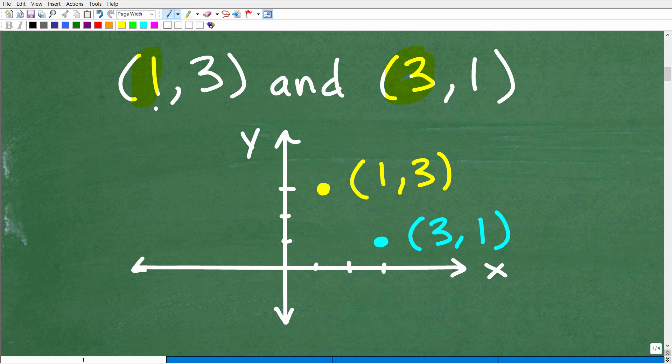But here is the point 1,3. If I was to plot it, it's 1 on the X axis, 3 on the Y axis, so it would be right here. And the point 3,1 would be right here, 3 on the X, 1 on the Y. Now, the question is, we want to find the slope between these two points.